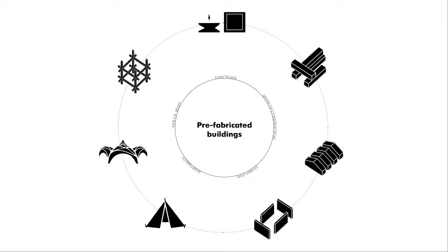First of all, what is a prefabricated building? It is a building which is built in a really small amount of time — it's about speed of construction. This speed is connected with function. We can't always build a random building, but the prefabricated system is one you can use even in emergency situations.